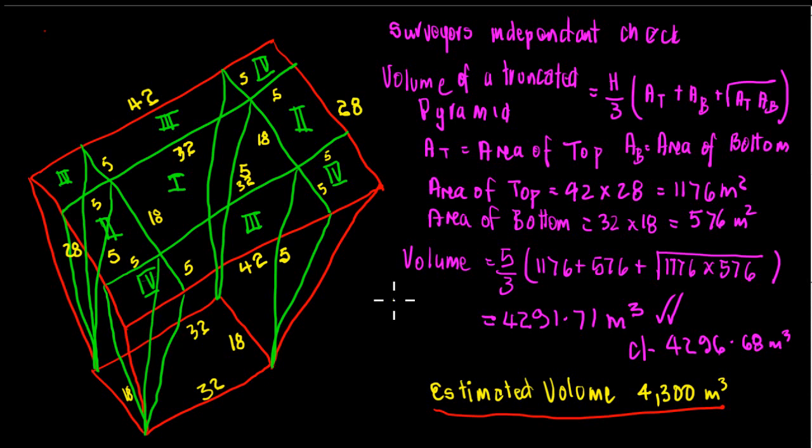Times 1,176 plus 576 plus the square root of 1,176 times 576, which works out to be 4,291.71 cubic meters. That's slightly different from our geometric shape there, but close enough.